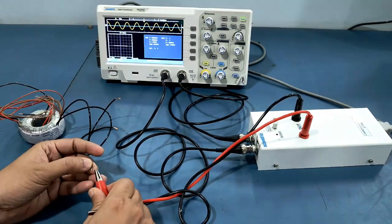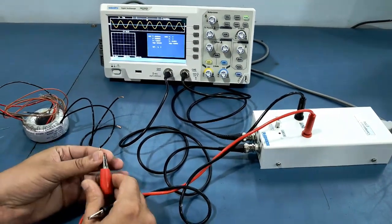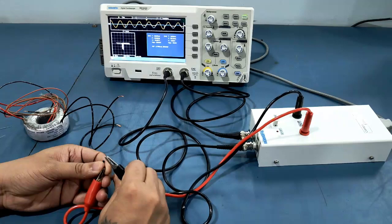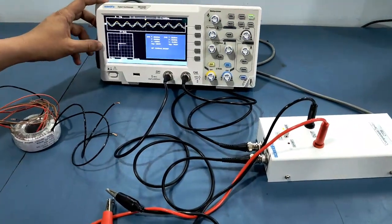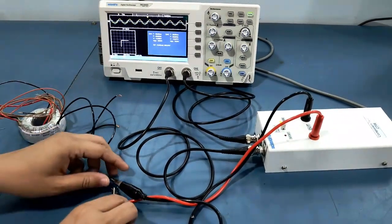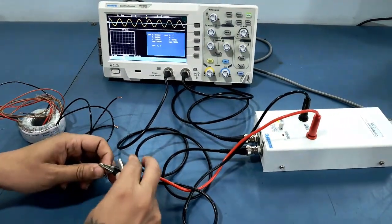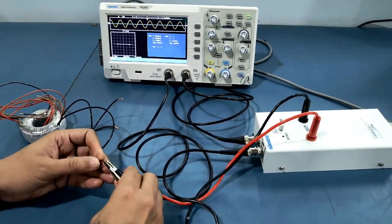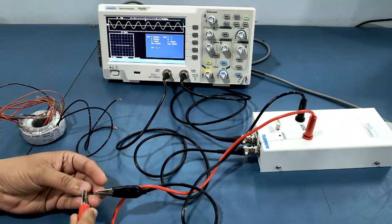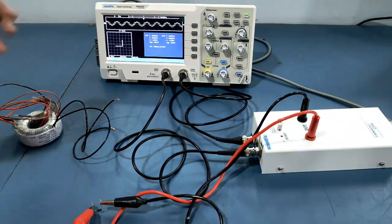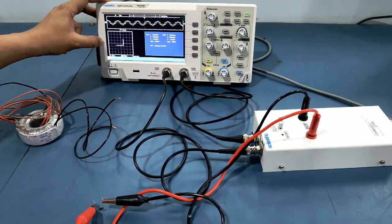Now we will check another diode. The pattern appears on the DSO. Now we will reverse the direction. The pattern appears for the reverse direction.